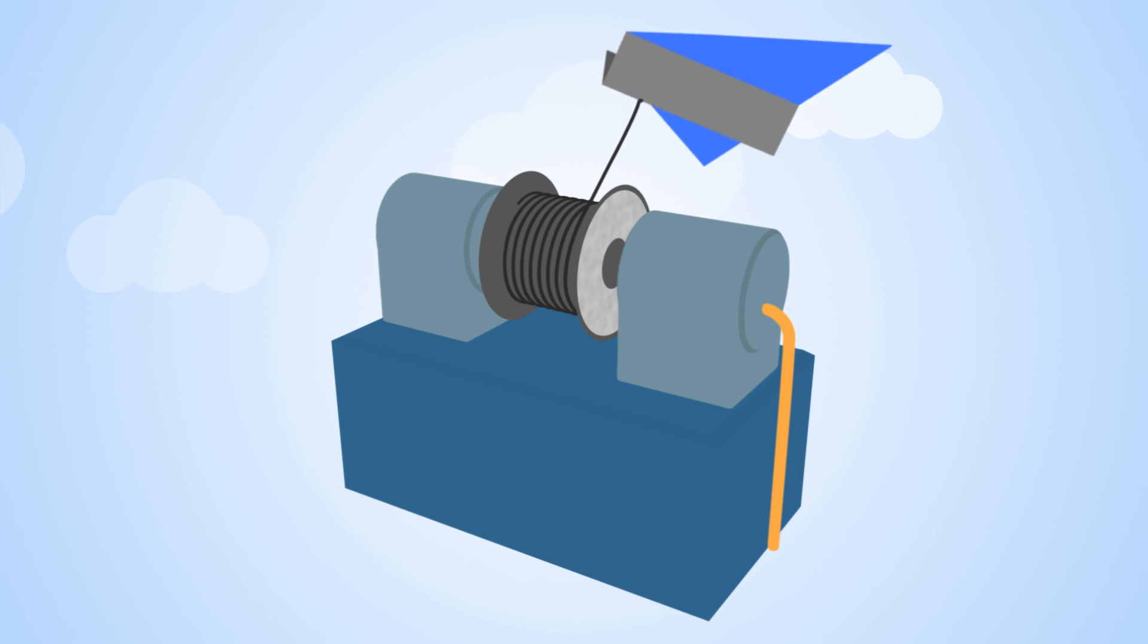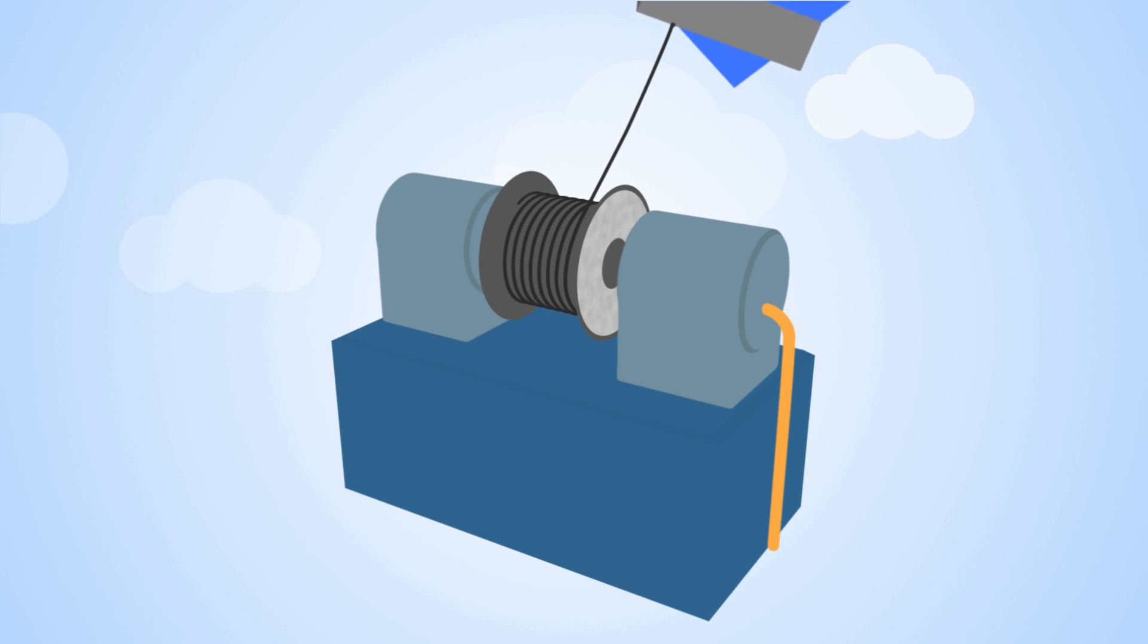But how does the technology work? The Tether wraps around a capstan drum connected to a generator. As the wind pulls the device away, the extending Tether spins the drum, generating electricity. Once TED reaches the maximum range,